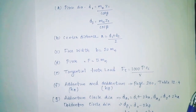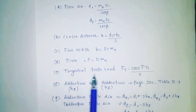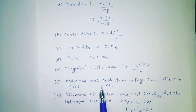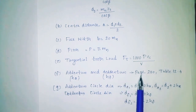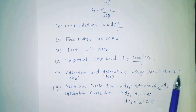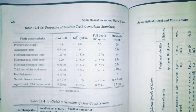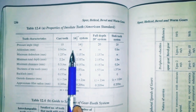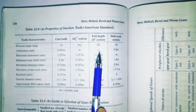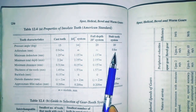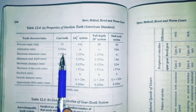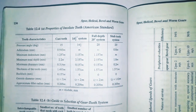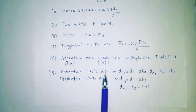Calculate tangential tooth load Ft = 1000·P·CS / V. For addendum and dedendum values, refer to page 230, table 12.4. Addendum: 14 degree full depth = M, 20 degree full depth = M, stub teeth = 0.8M. Minimum dedendum: 1.157M; stub teeth = M.